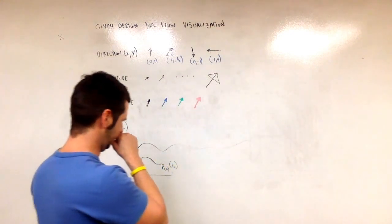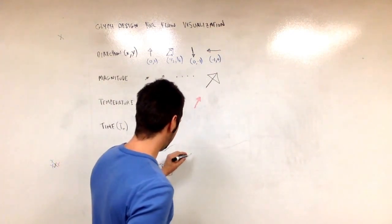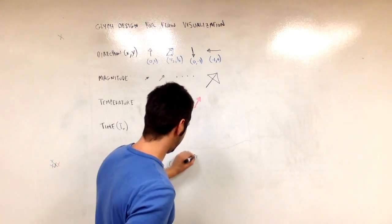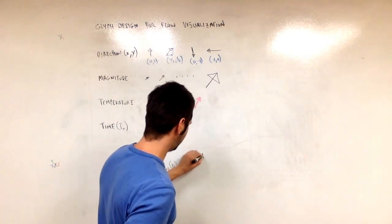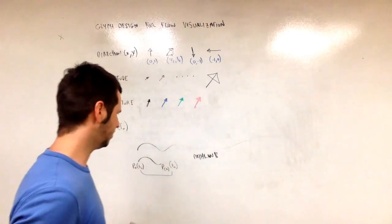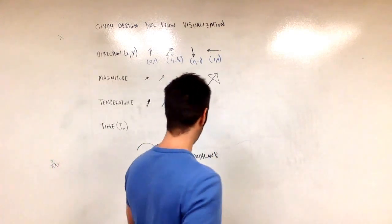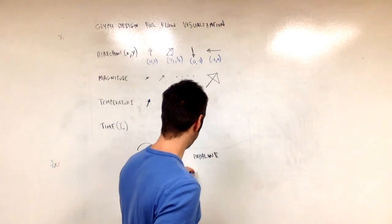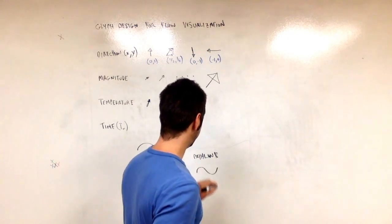And that's the path line. So we can use a path line, but we don't want to use a full path line, just a pathlet. So a short curve.